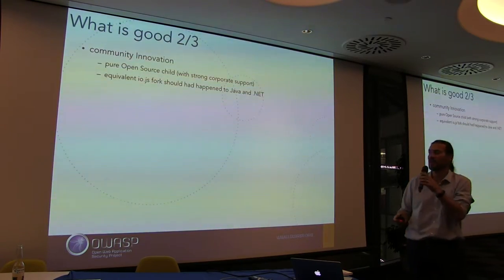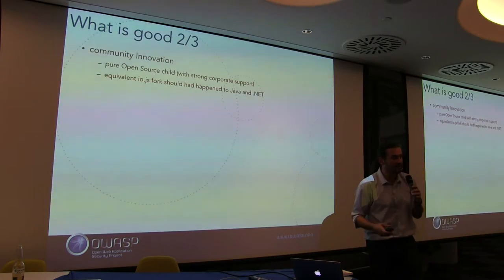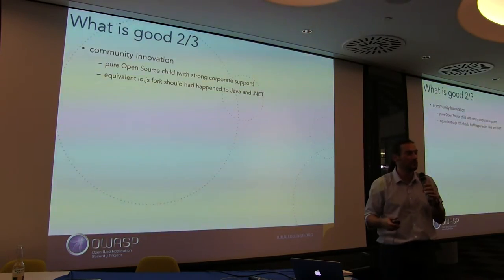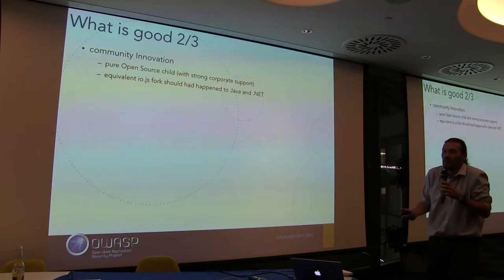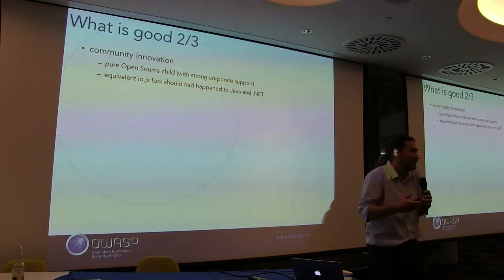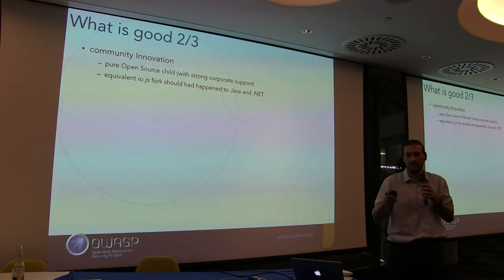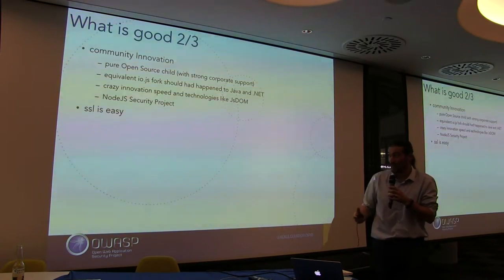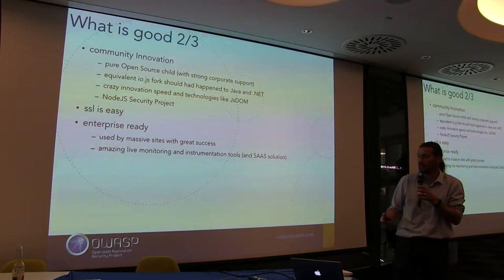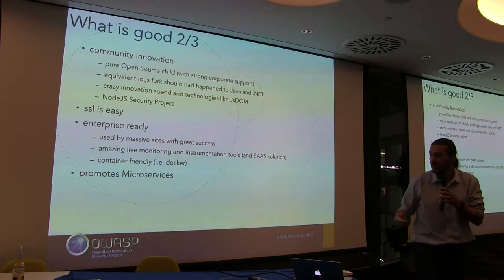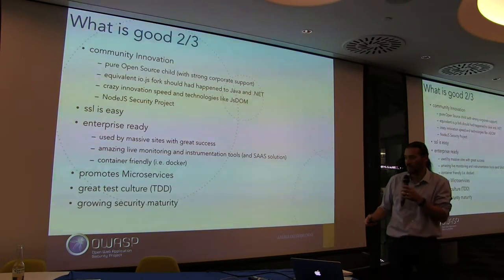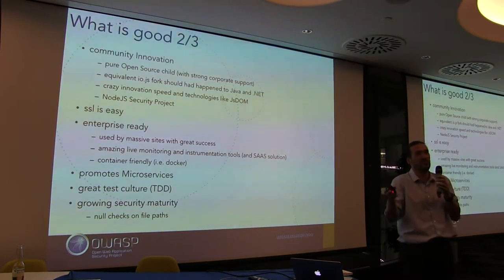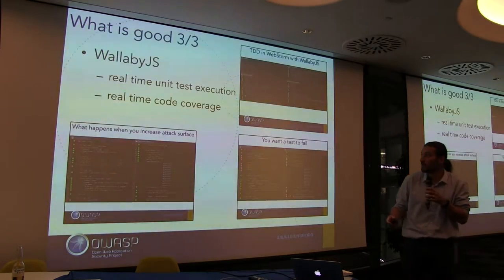The fork into IOJS was really powerful, because .NET and Java deserve one of those — Oracle and Microsoft would have done things differently if somebody had said 'you guys are really screwing up, we're going to fork it.' Then they realized: let's join together and Node is much better. The Node.js security project is very good. SSL is actually quite easy to do. It's enterprise-ready, supports massive sites, very container-friendly, and great for creating microservices. Testing development is part of the culture and there's a growing security maturity.